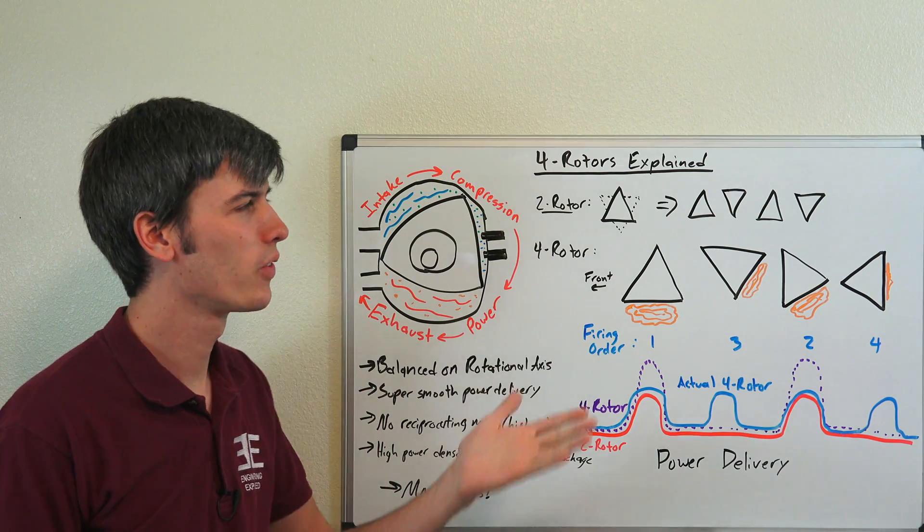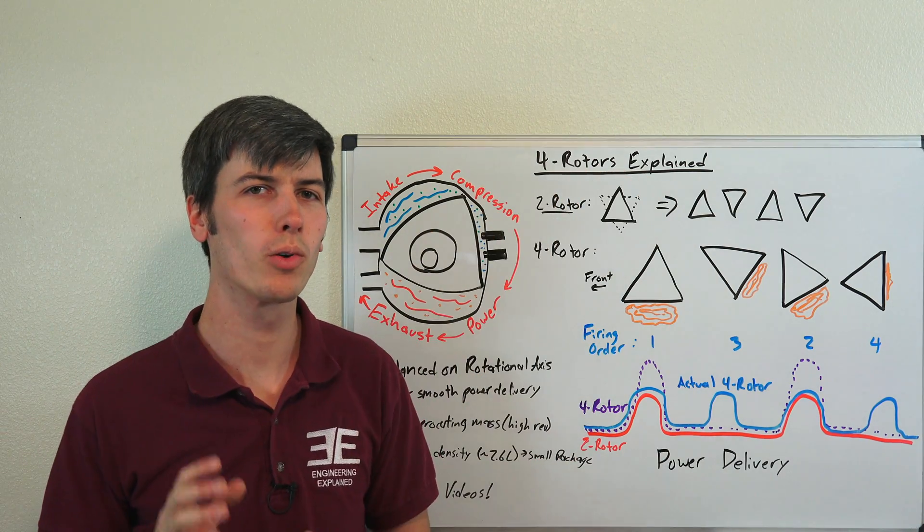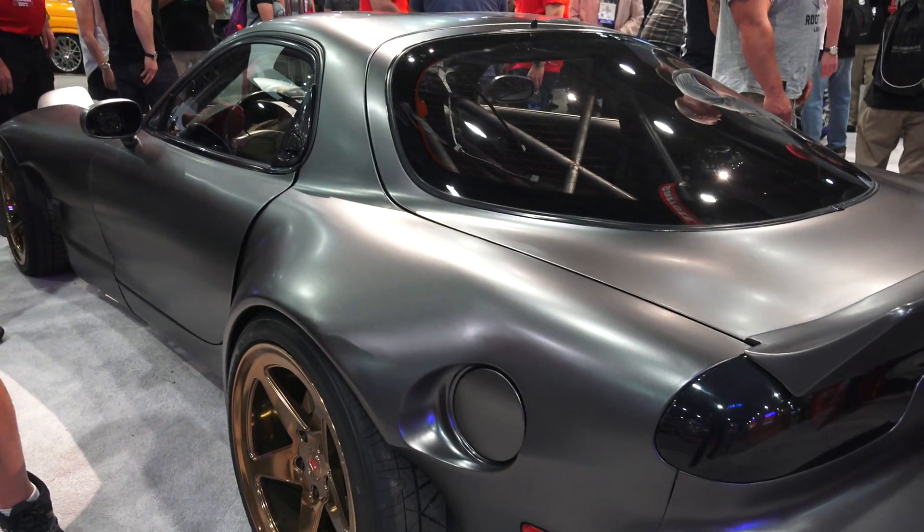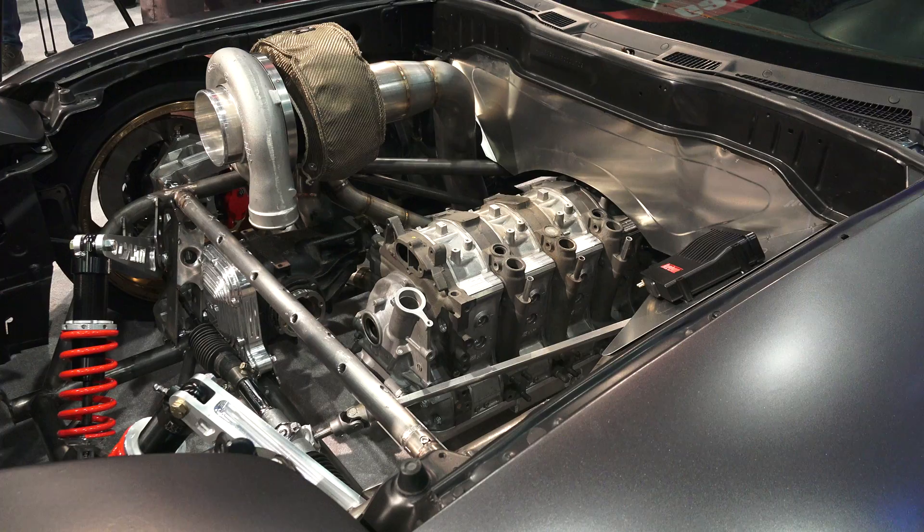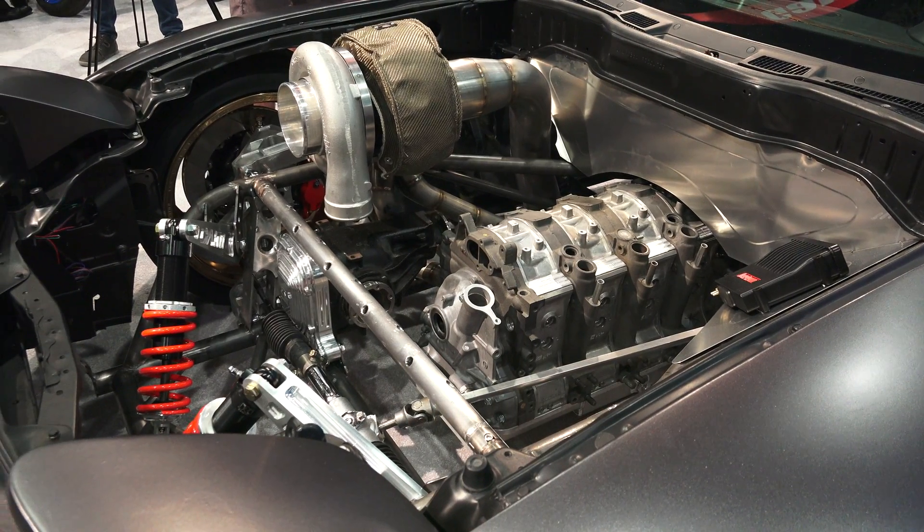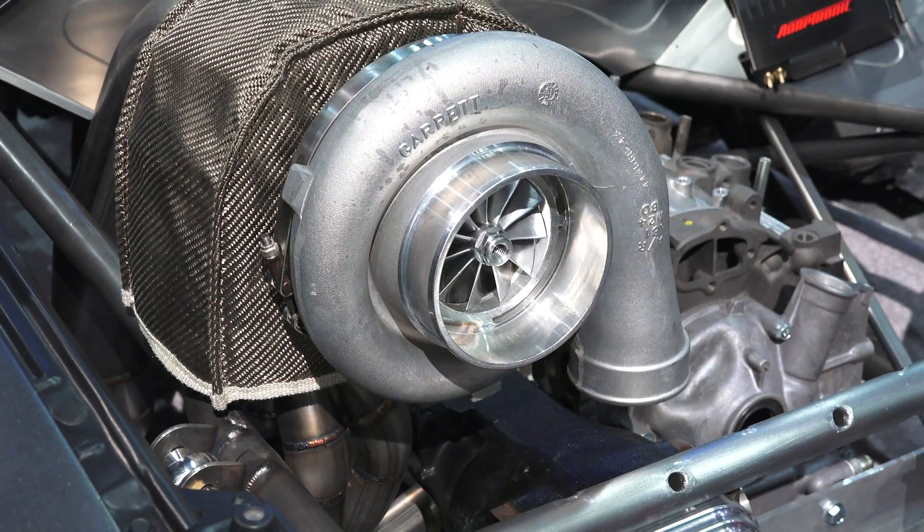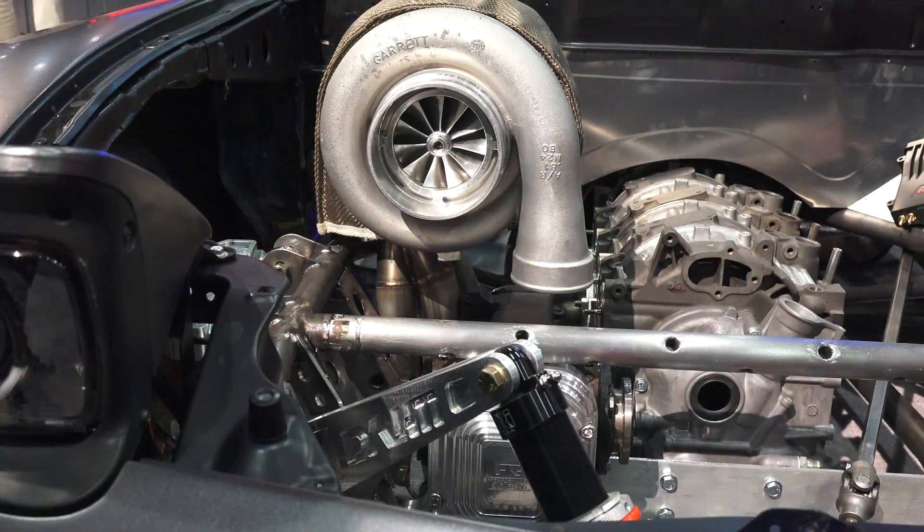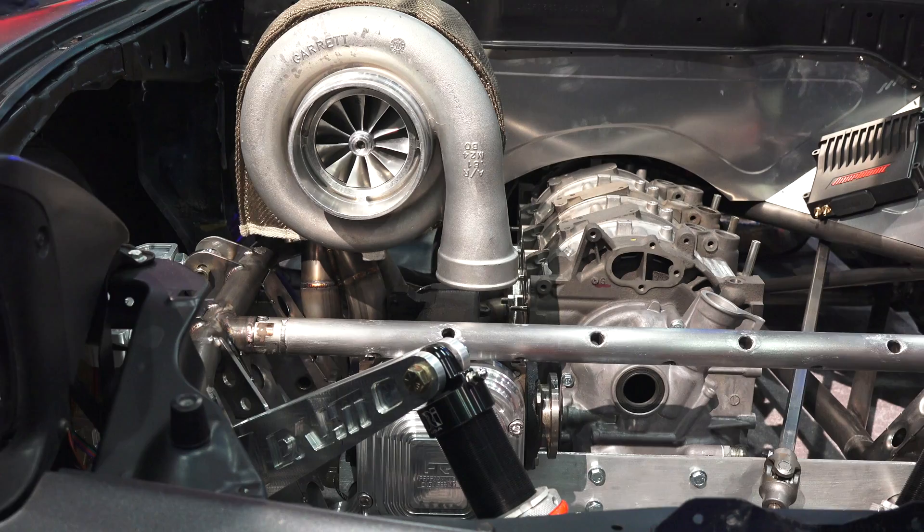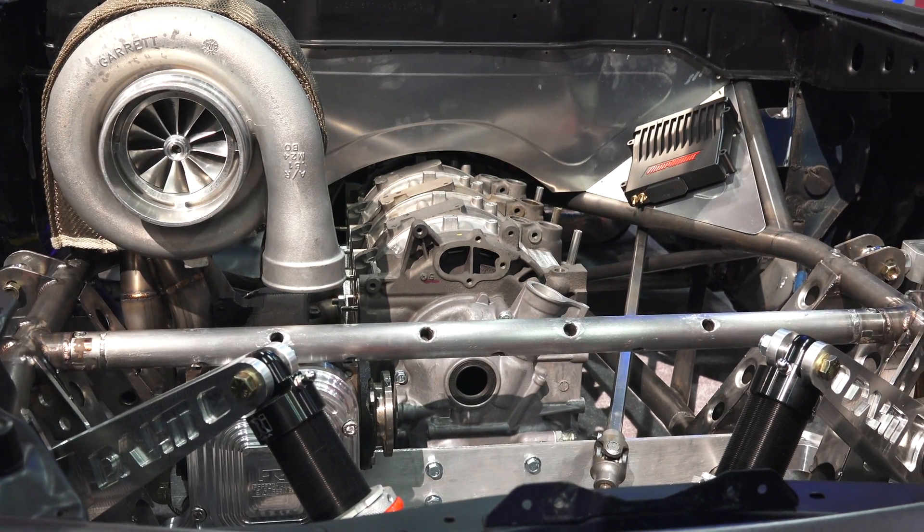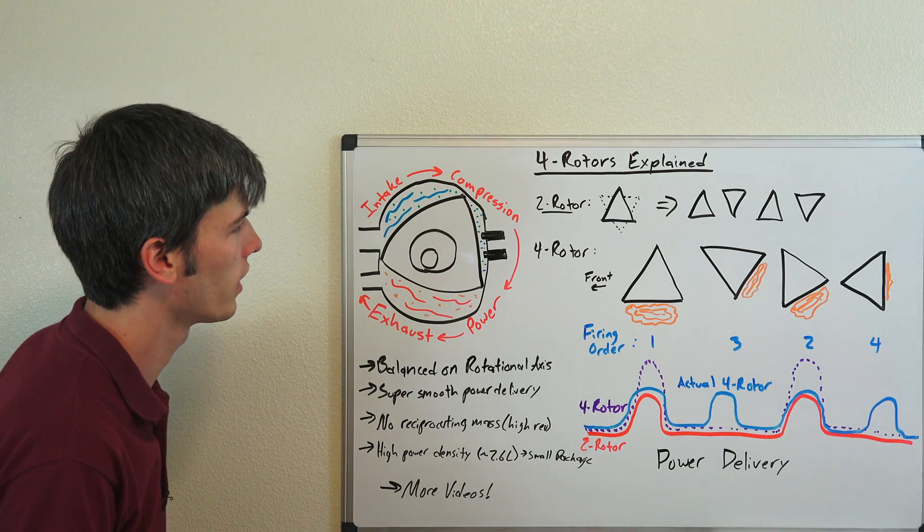Hello everyone, and welcome. In this video we're going to be talking about how four rotor rotary engines work. This video was inspired by Rob Dom's current build. He's building the world's first all-wheel drive four rotor RX-7, a very cool project. If you haven't yet checked it out, I'd highly recommend going over to his channel. I'll include a link in the video description. Very cool build. He's got a lot of cool, geeky engineering stuff going into it that he shows some of the details behind. That's very fascinating to follow.